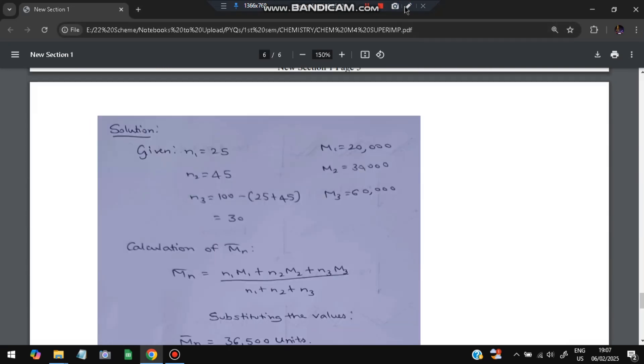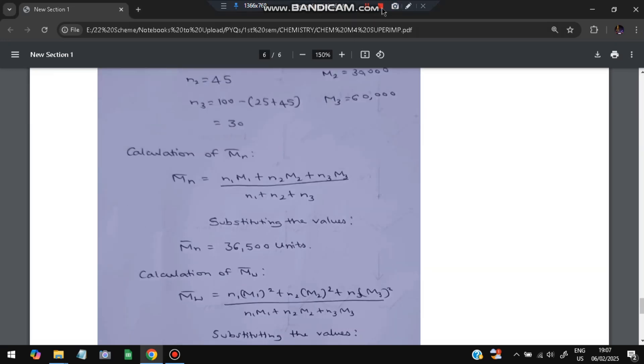n1 is given as 25, n2 is 45, so n3 will be 100 - 25 + 45 which is 30. And m1 is 20k, 30k, and 60k. Now the calculation of Mn which is the number average: Mn = (n1×m1 + n2×m2 + n3×m3) / (n1 + n2 + n3). So we'll be getting the value as 36,500.